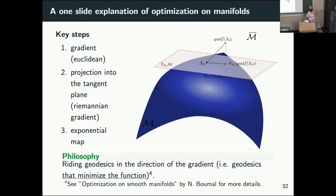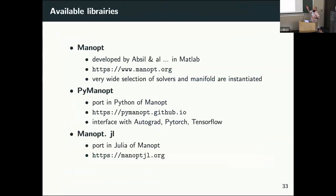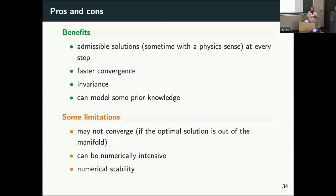There are many libraries for doing this. Usually you only have to implement the cost and the gradient — and if you don't know how to compute the gradient, autograd will do it for you. The advantages: you always have a feasible solution (something on the manifold), often faster convergence than the Euclidean counterpart, you can encode invariants and incorporate prior knowledge. The downsides: sometimes it may not converge if the optimal solution is out of the manifold; it can be numerically intensive; and there can be some numerical instabilities.